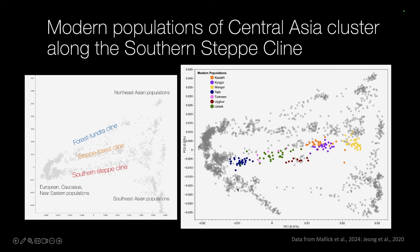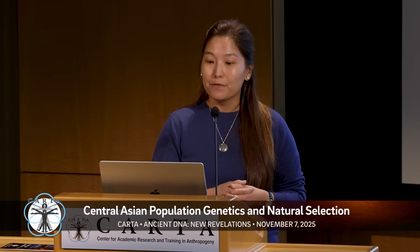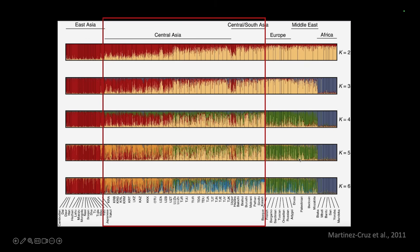Modern populations of Central Asia cluster along the southern steppe cline. Here we can see examples of modern-day Kazakhs, Tajiks, Uyghurs, Turkmen, Uzbeks, and other groups. In the admixture analysis, where every population gets its own color, Central Asians are represented as a mixture of East Asian ancestry shown in red and European ancestry shown in yellow, with various mixtures across populations.